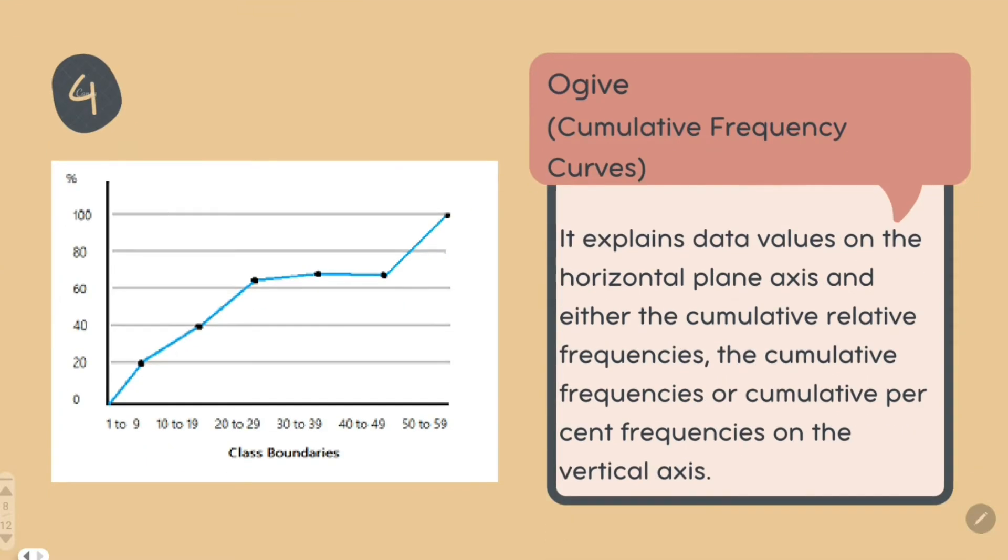If you see a graph like this, this is a line graph or ogive. An ogive is a cumulative frequency curve. These are classes and these are cumulative frequencies. If this is class boundaries from 10 to 90, this represents everything up to 90, not just 10 to 90, but 0 to 90.